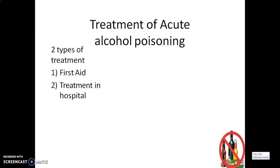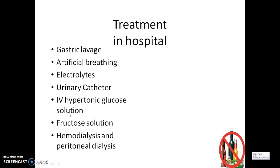Coming to the treatment of alcohol poisoning in hospital: gastric lavage technique can be helpful in the removal of unabsorbed poison. Artificial breathing, whenever required, can be included. Monitoring electrolyte imbalance should be done. Urinary catheterization can be performed. Highly hypertonic glucose solution can be given if severe hypoglycemia is observed. Fructose solution can be administered. Hemodialysis and peritoneal dialysis can also be preferred.